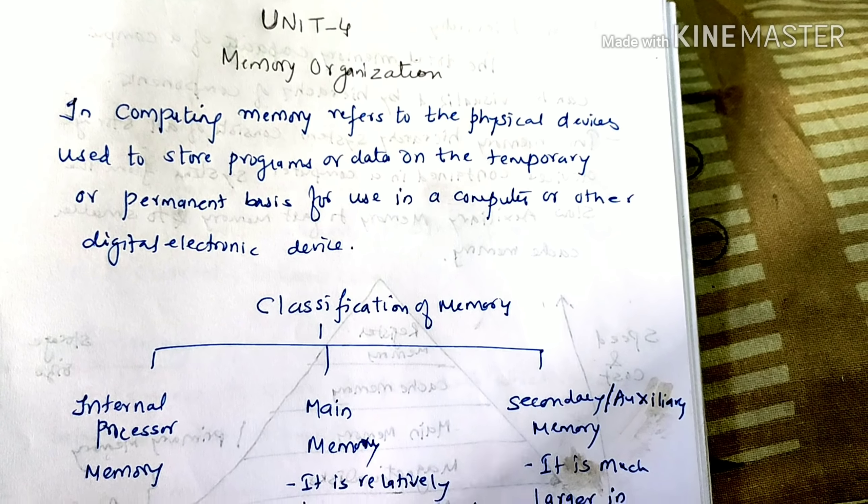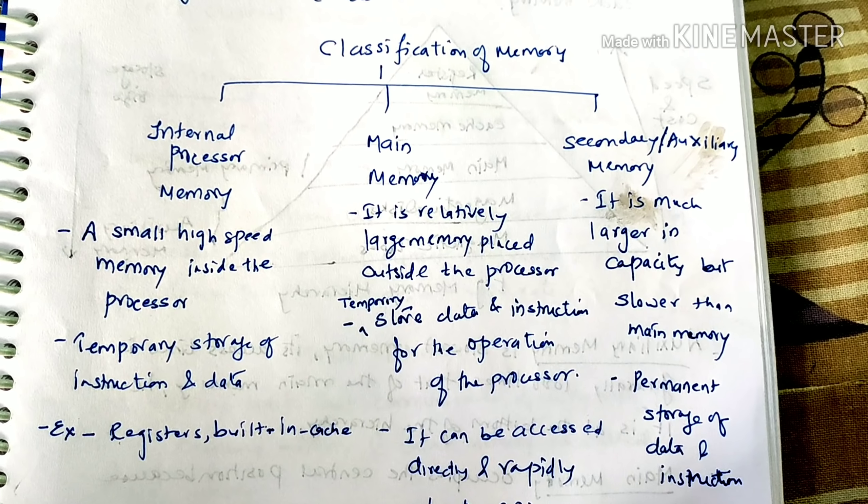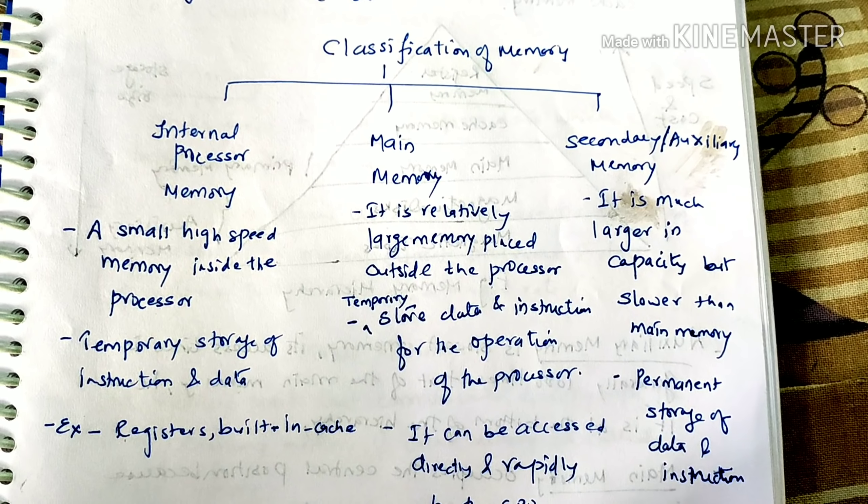Next is the classification of memory. Memory has three types: internal processor memory, main memory, and secondary or auxiliary memory. Internal processor memory is a small, high-speed memory inside the processor used for temporary storage of instructions and data. It includes registers and built-in caches, all stored inside the processor.